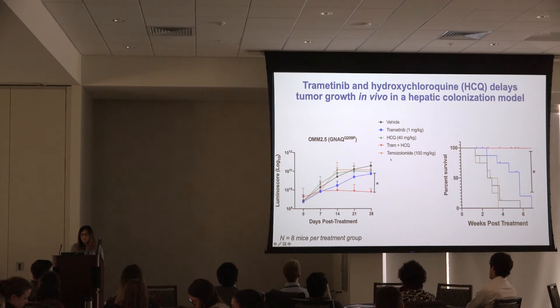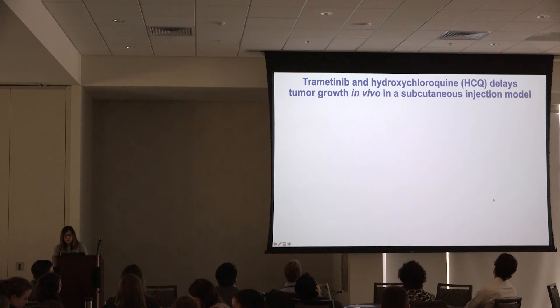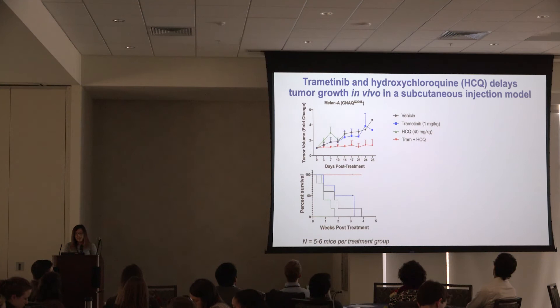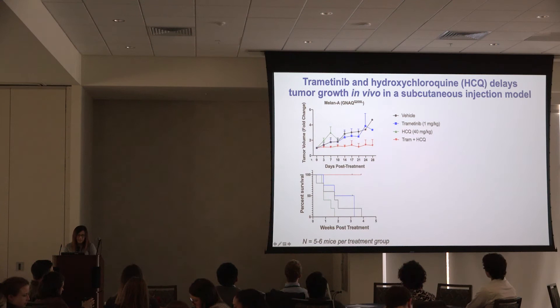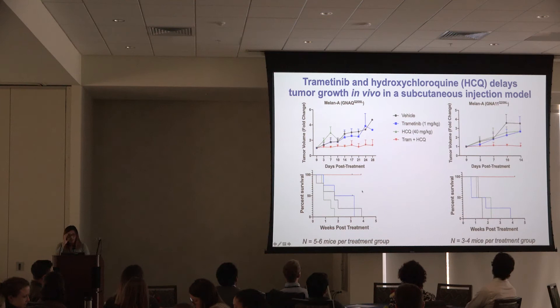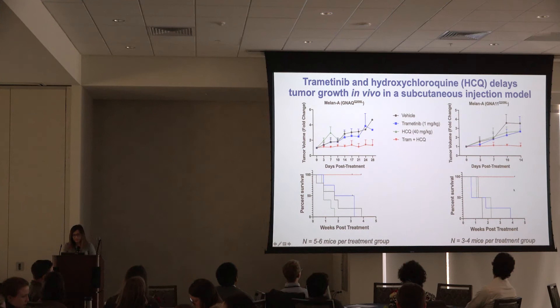The trametinib and hydroxychloroquine combination group also had increased survival compared to trametinib alone and other treatments. We also used a subcutaneous injection model with immortalized melanocyte cells transduced with the GNAQ mutation in immunocompetent syngeneic C57BL/6 mice, again showing delayed tumor growth and increased survival with the combination. A similar pattern was seen with cells transduced with the GNA11 mutation, where trametinib and hydroxychloroquine delayed tumor growth and increased survival.